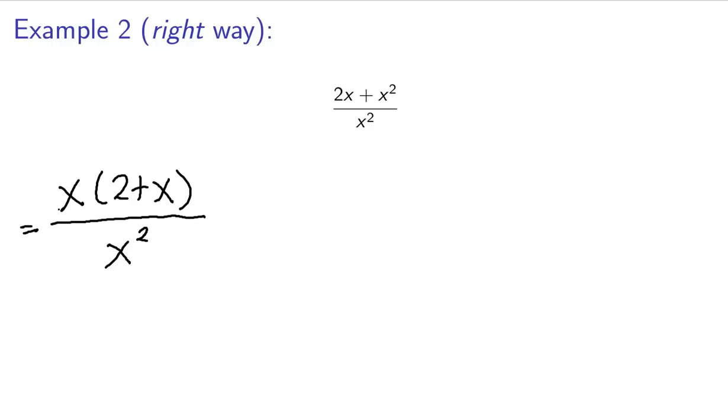So now I have 1x here and 2x is down here. I can cancel one of them and I'll have just one left here. So I'll have 2 plus x over x and this is the correct way to cancel.